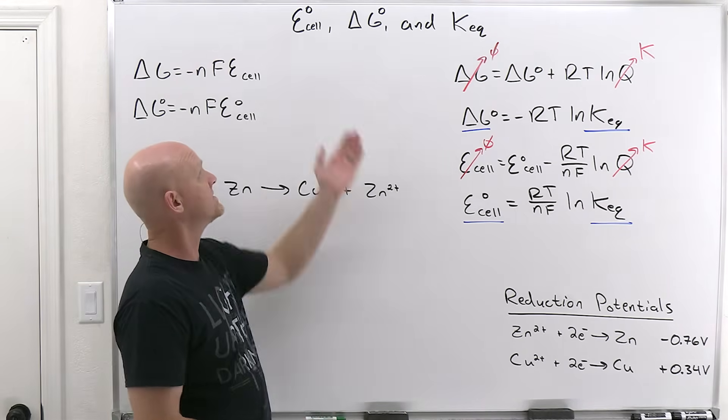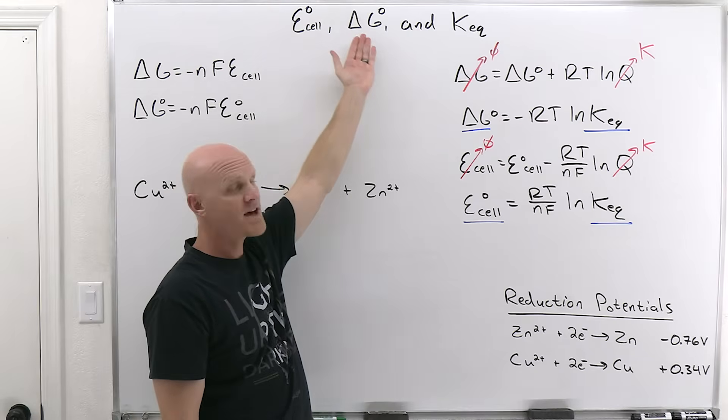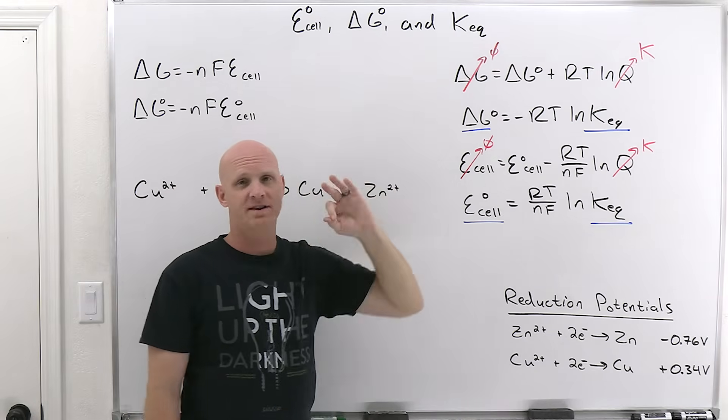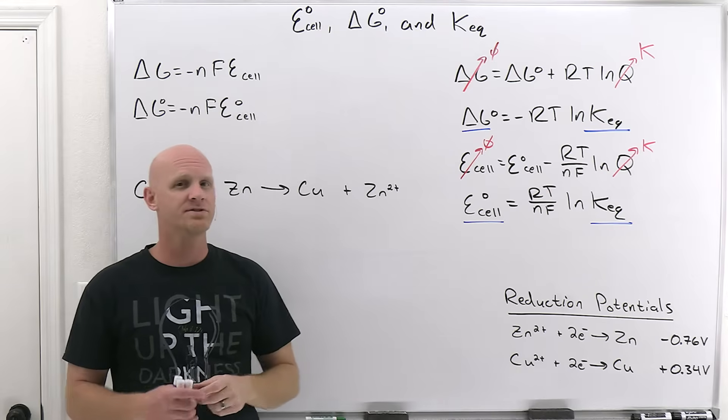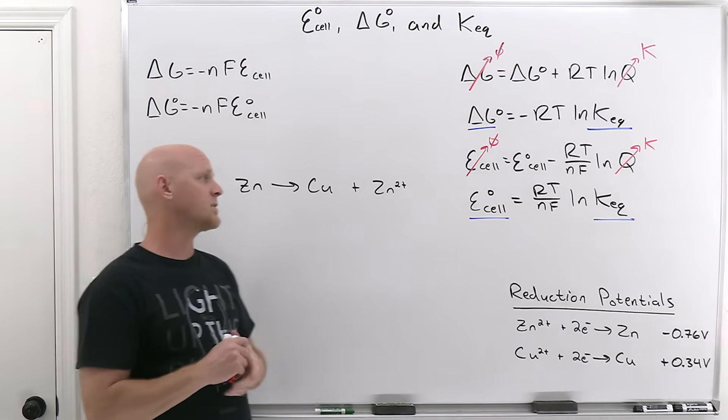Cool. And so if you know any one of these three, your standard value for E cell, your standard value for delta G, or your equilibrium constant, any one of those three, you should be able to calculate the other two. And as I said, again, that's exactly what we're going to do.